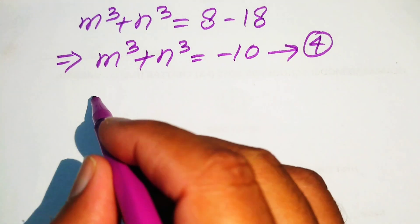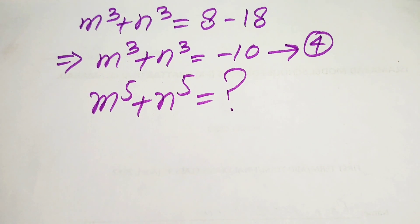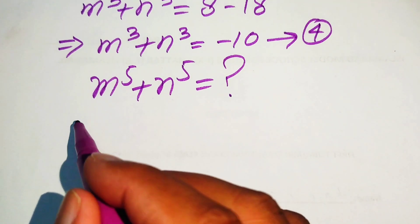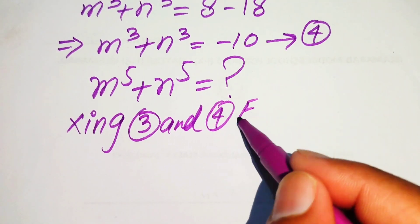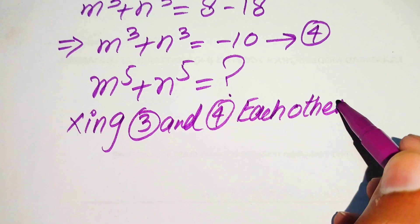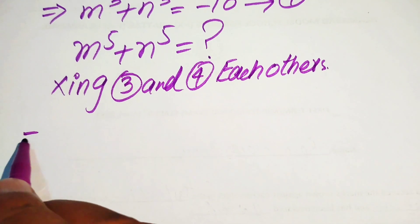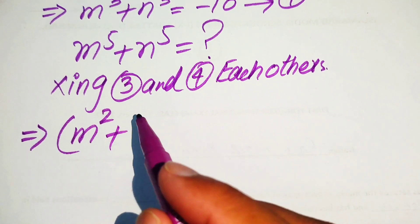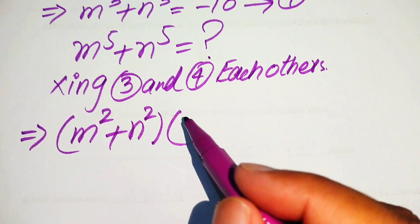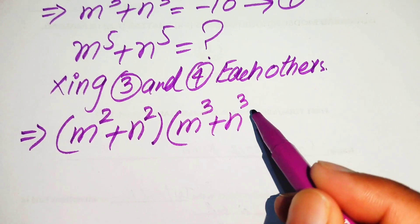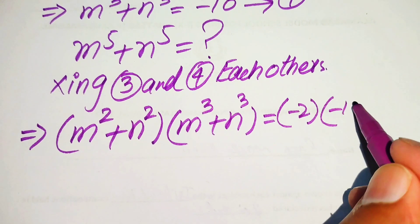Since we need the value of m to the power of 5 plus n to the power of 5, in order to make the exponent of m and n equal to 5, we multiply equation number 3 and equation number 4 with each other — left hand side with left hand side and right hand side with right hand side. The left hand side of equation number 3 is m squared plus n squared, and of equation number 4 is m cubed plus n cubed, while the right hand sides are minus 2 and minus 10.